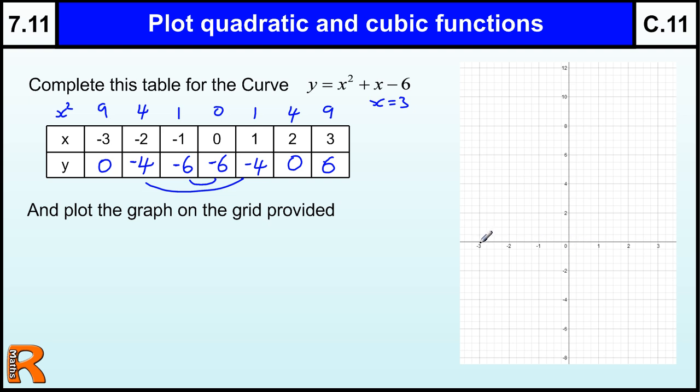So at minus 3, we're going to plot 0, which is here. Minus 2, we're going to plot minus 4, which is down here. Minus 1 is minus 6. 0 is minus 6. 1 is minus 4. 2 is 0. And 3 is 6. It's going to be up here.